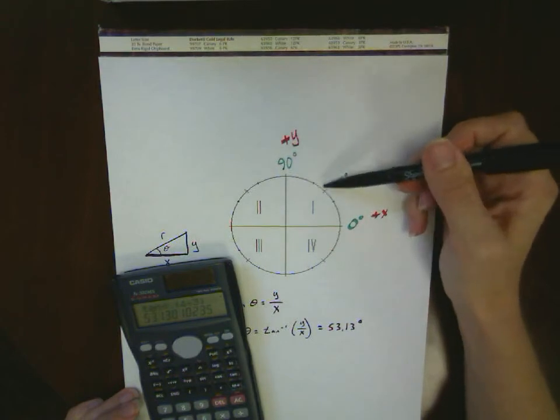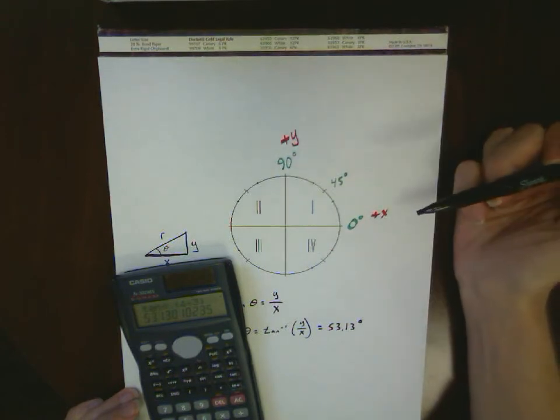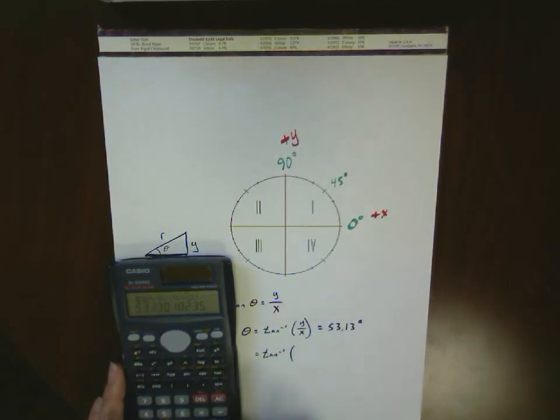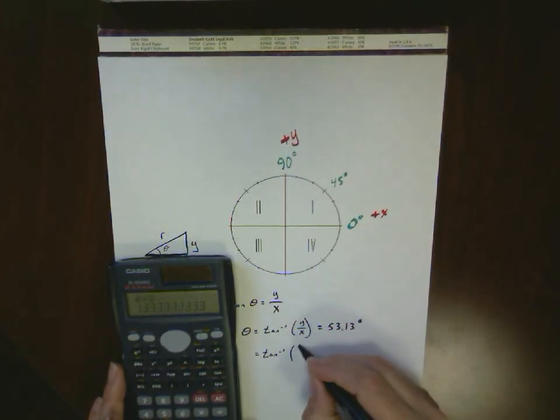And again, it's what we predicted. It's between 45 and 90 degrees. Now I want to point out to you, when you're doing this, you could actually figure out what is 4 divided by 3 first.